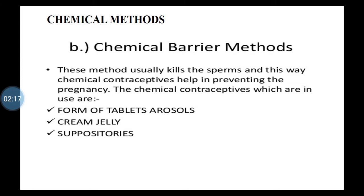Chemical methods are available in various forms: semi-solid foam tablets, creams, and contraceptive creams and jellies. Oral pills are also available. These can come in the form of suppositories or pessaries. These tablets, creams, or pessaries are intended for vaginal use.